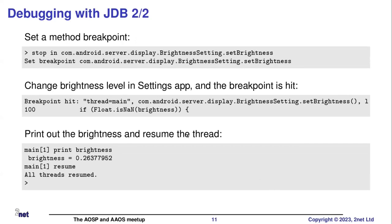Then I can set a breakpoint. I'm setting a method breakpoint: I say 'stop in', followed by the name of the method. Then I go into the Settings app, twiddle the slider back and forth, and you will see that it hits the breakpoint. And once again I can look at the brightness — I type 'print brightness' and it tells me the value.